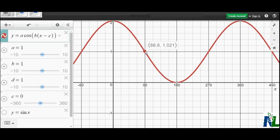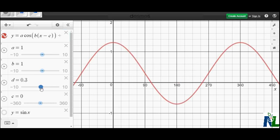If we made d 3, your midline would be 3. So d essentially is the equation of the midline. So let's put that back to 0, back to our base graph.